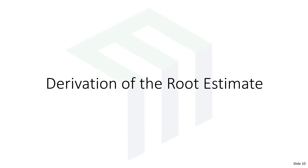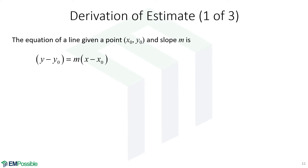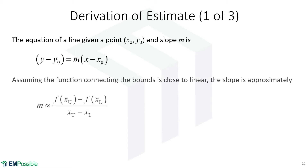Let's derive the equation we're using to estimate the root. We start with the equation of a line — we need the slope and one point on the line, written as x-naught, y-naught. If we assume the function between the upper and lower bounds is linear, or at least approximate it that way, then the slope — rise over run — is the function at the upper bound minus the function at the lower bound, divided by the x-value at the upper bound minus the x-value at the lower bound.